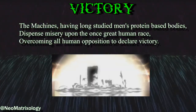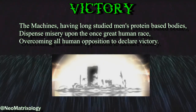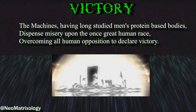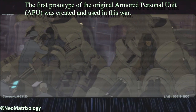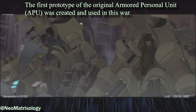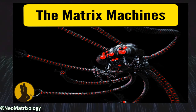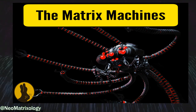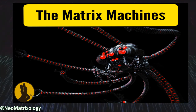Victory. The machines, having long studied man's protein-based bodies, dispense misery upon the once great human race, overcoming all human opposition to declare victory. The first prototype of the original armored personal unit — APU — was created and used in this war. I also mentioned the APU's origin in the real-world machines of the Matrix Trilogy Explained video here on this channel, so it is always fun to find additional confirmation of the ideas presented there.